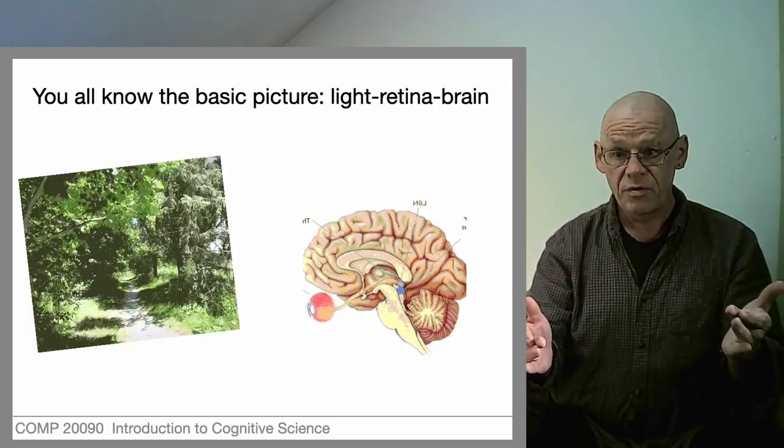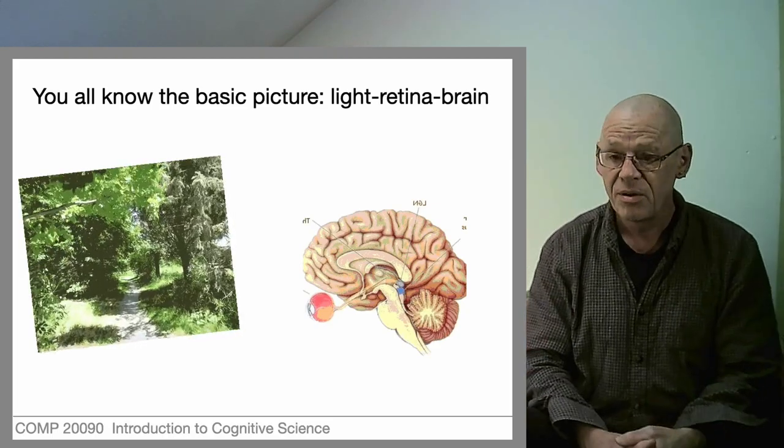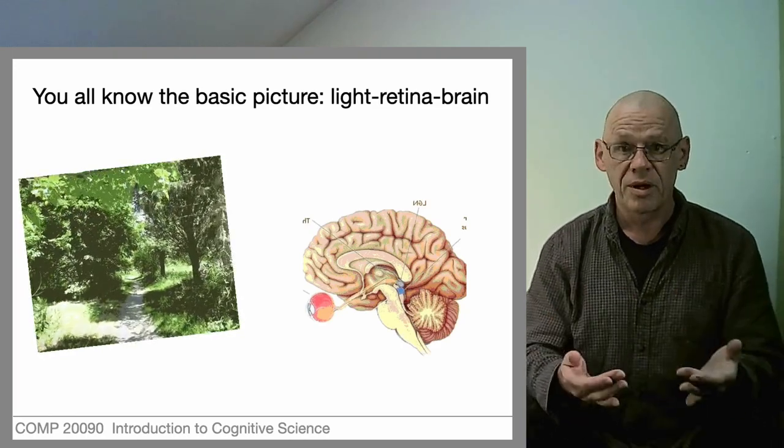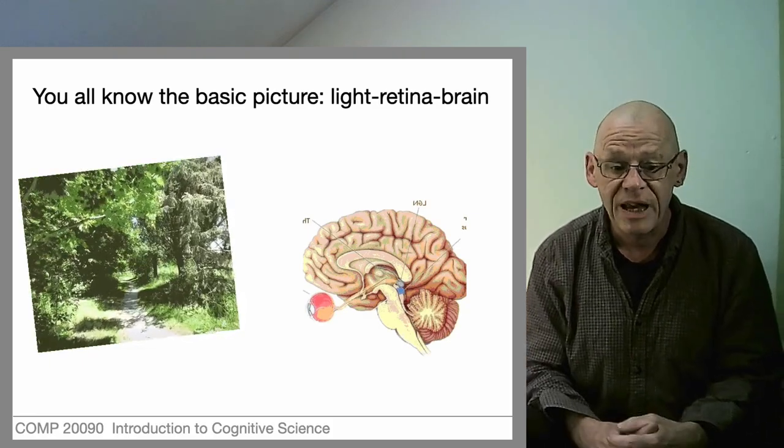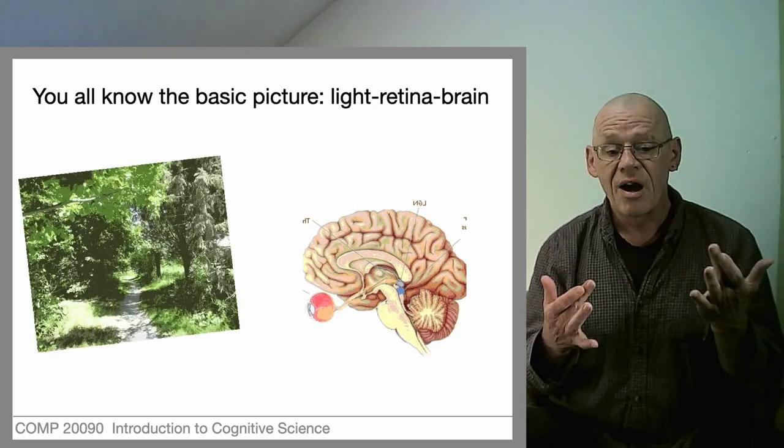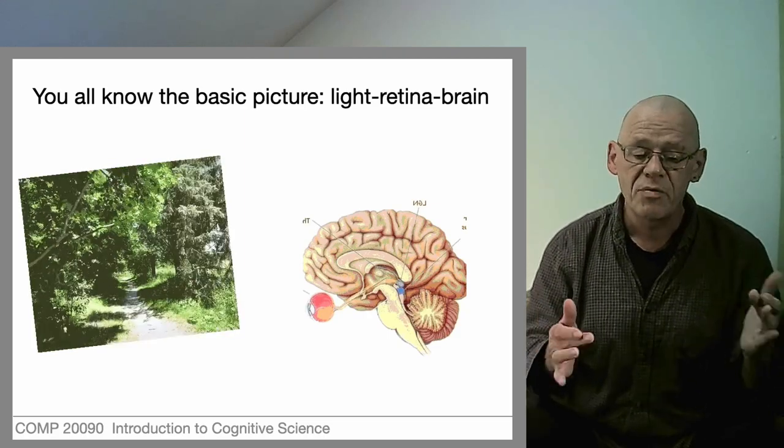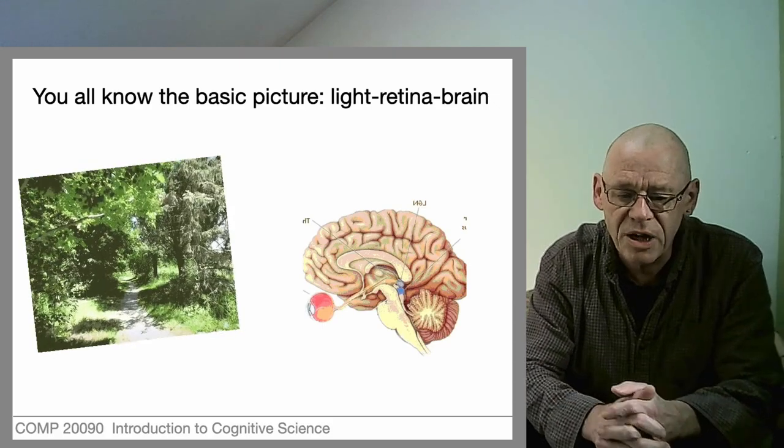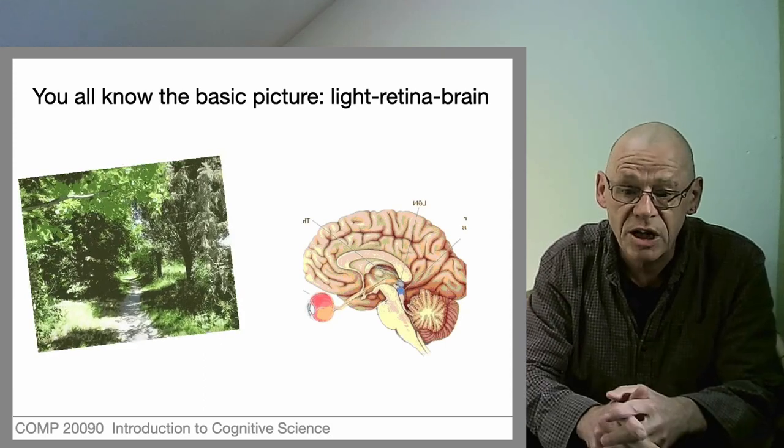Those changes can come from two places. One is the world may move - so a bear might run across in front of me, and that's going to cause a changing pattern on my retina. The other is I may chase the bear - if I'm moving through the world, that's also going to generate a changing pattern. Imagine walking down this leafy lane - there's going to be changes on the retina co-produced by the movement of the trees and anything else moving, and also by the movement of your body.